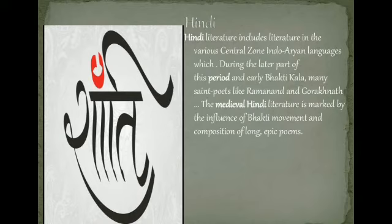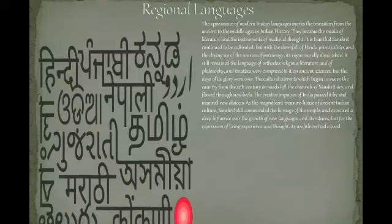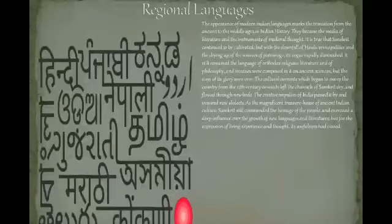Persian Literature: Persian literature arrived in the Indian subcontinent with the coming of the Persian rulers. The language and literature spread as the rulers were more comfortable with languages from their home regions. The rulers maintained poets and writers in their courts. Tuzk-e-Babri was written in Turkish and translated into Persian. Abdul Fazal's Akbarnama and Tuzk-e-Jahangiri are famous examples of Persian literature.